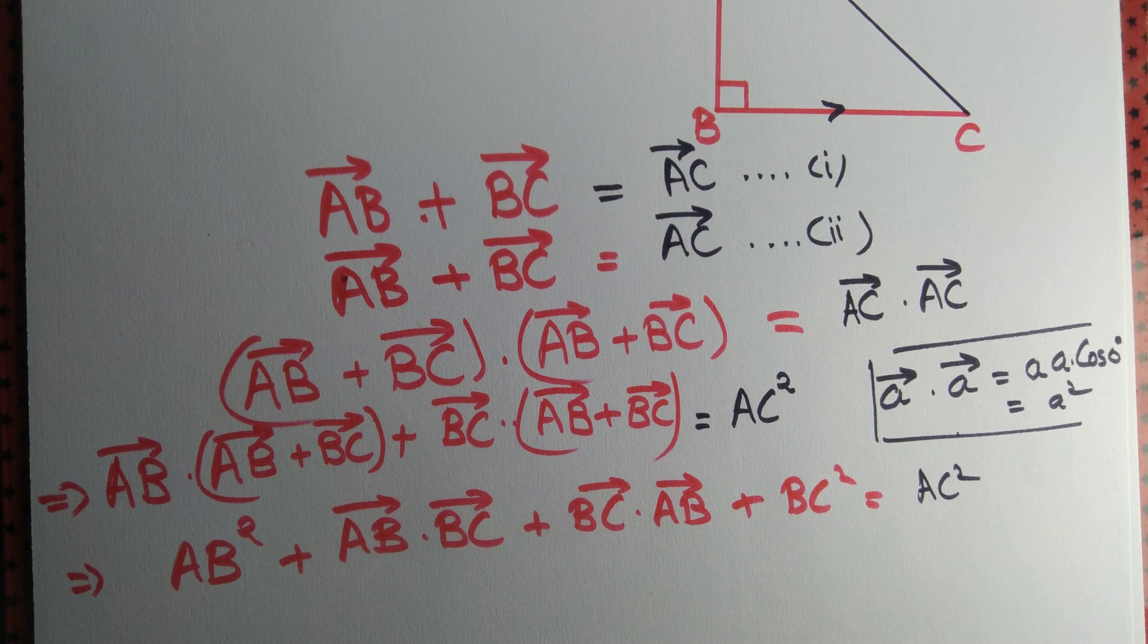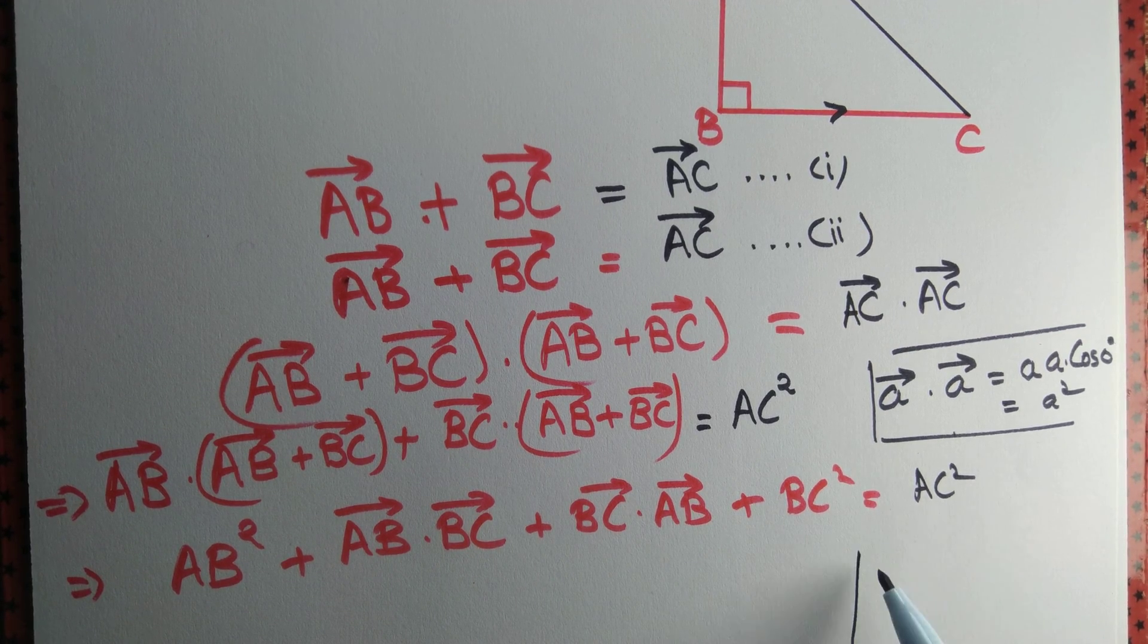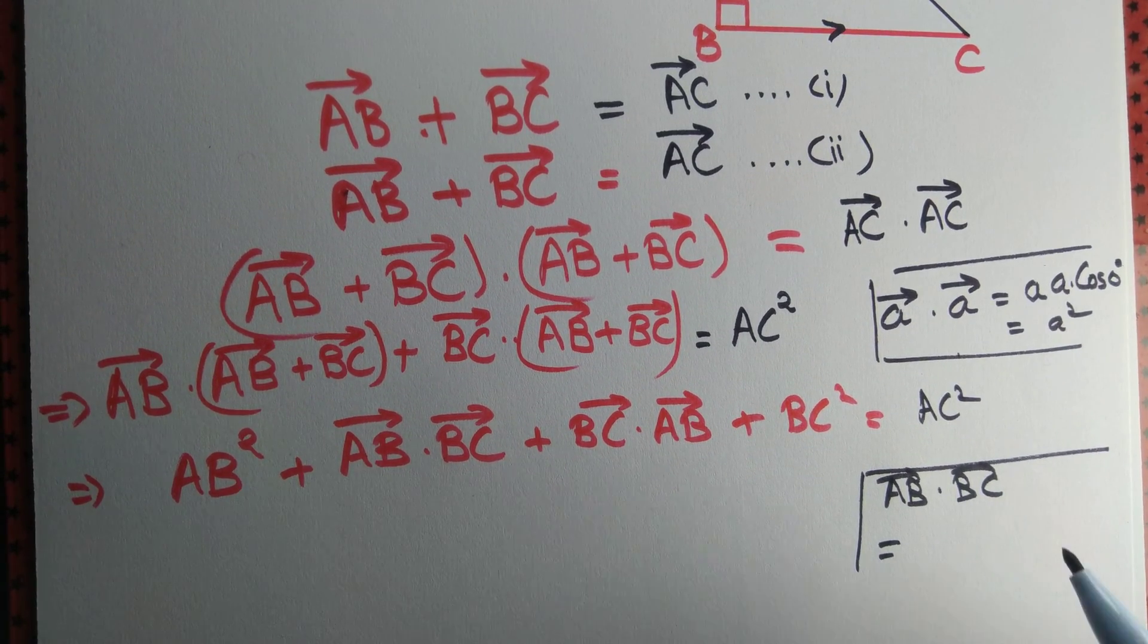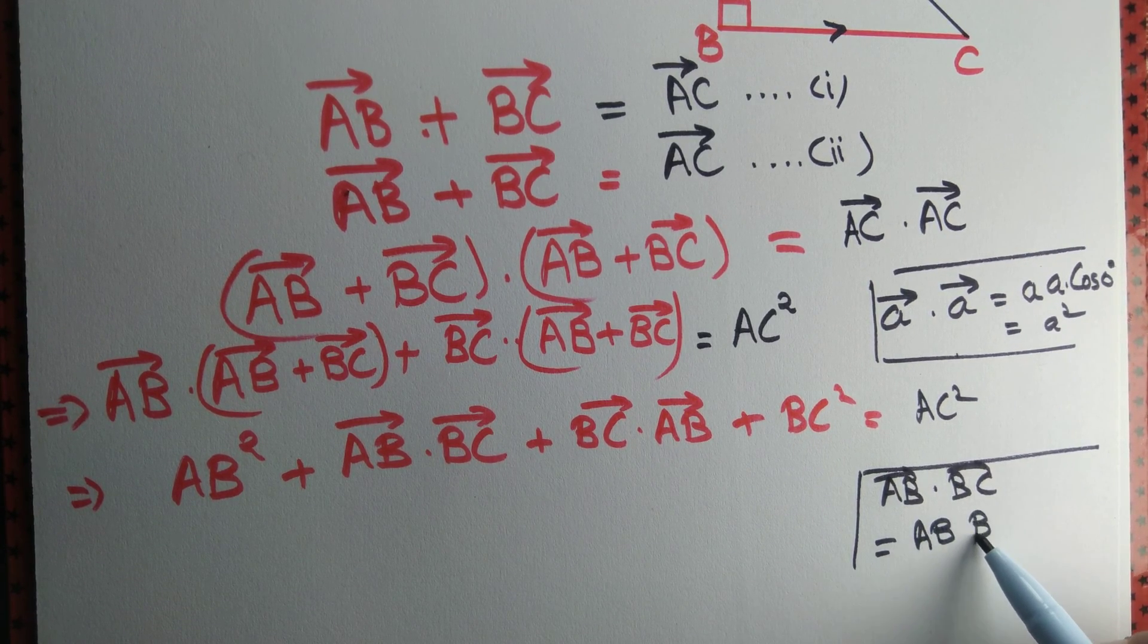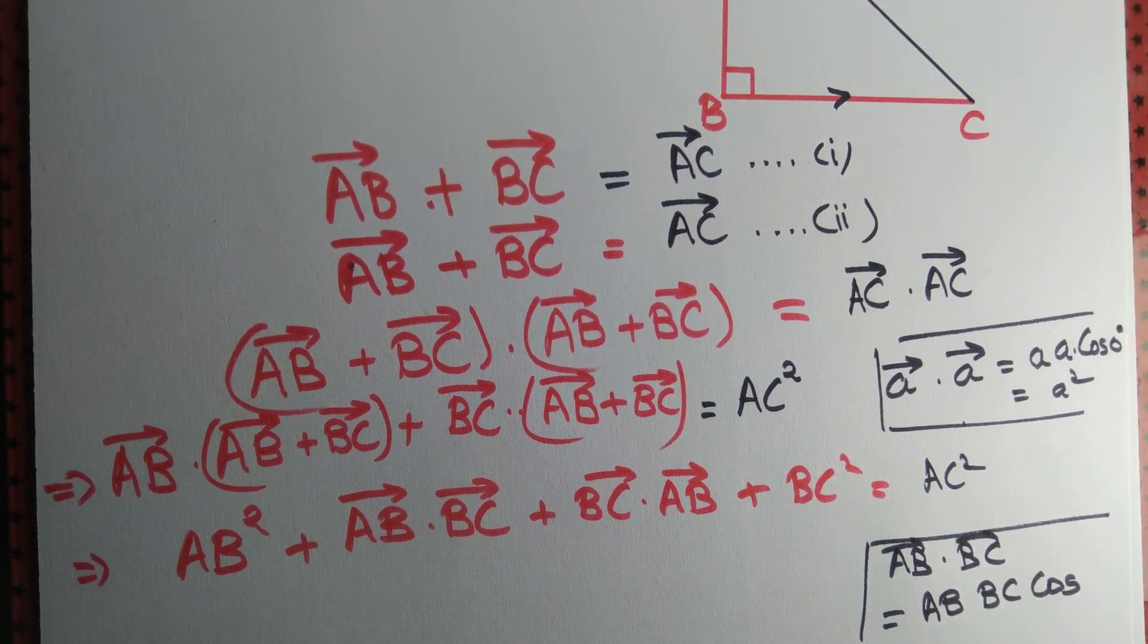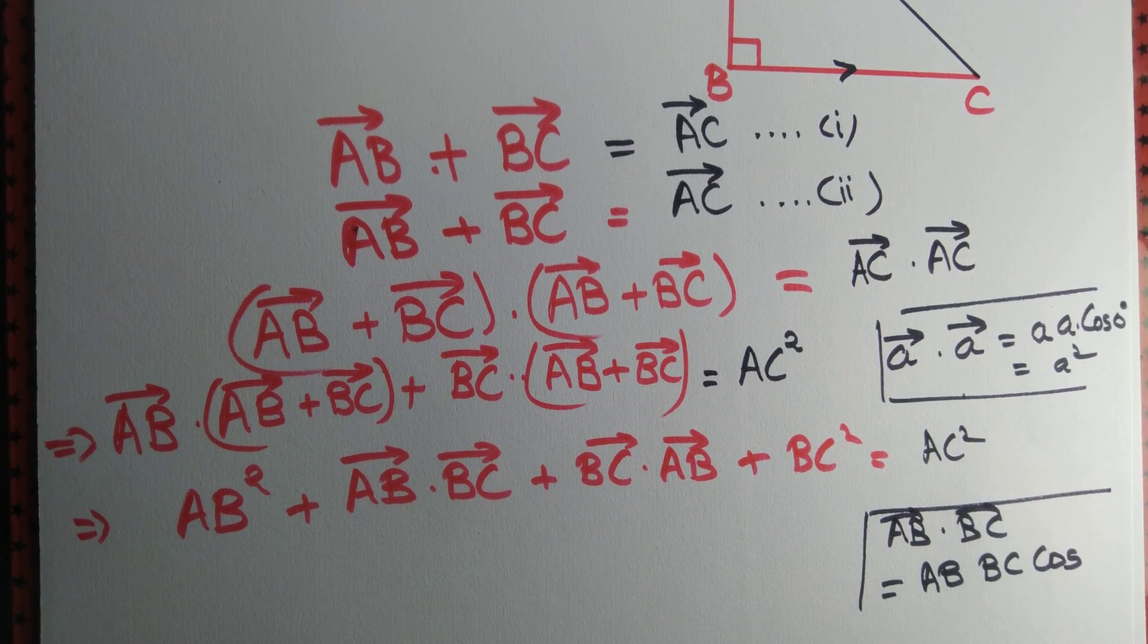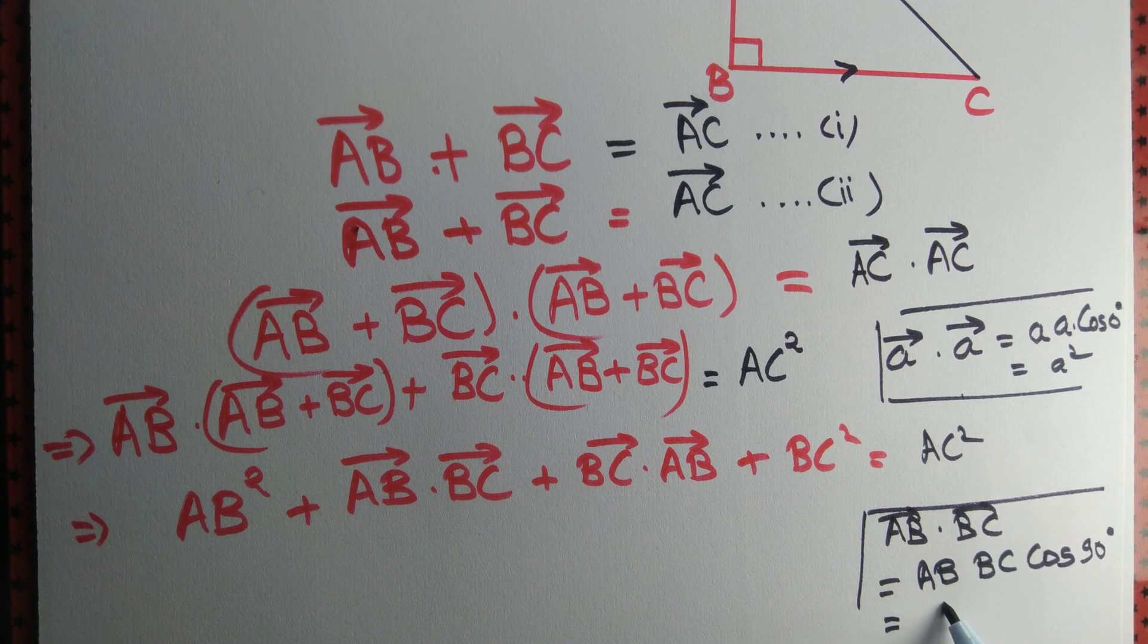And AB dot BC, what can you say about AB dot BC? AB dot BC equal to magnitude of AB, that is AB, magnitude of BC, that is BC, times cos theta, where theta is the angle between AB and BC. If we look at the figure, then we have AB and BC are perpendicular to each other, so angle between AB and BC is 90 degrees.